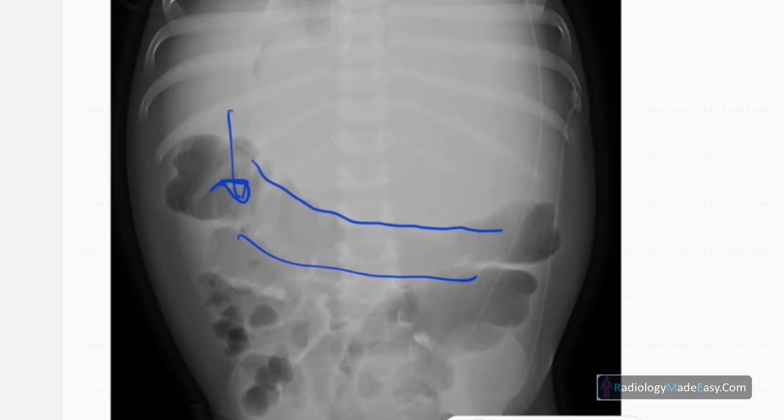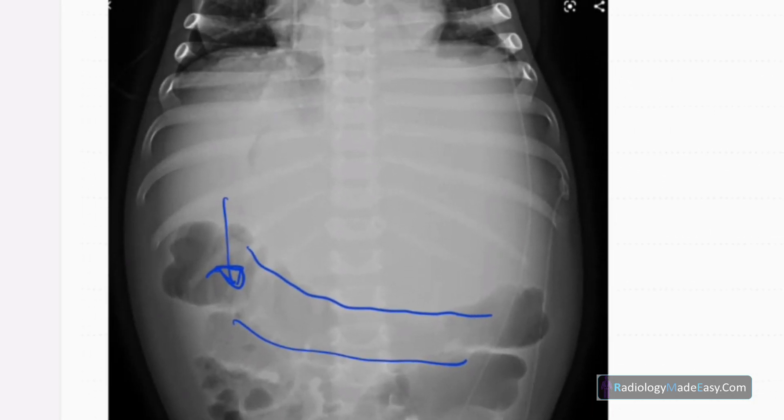So it is inferior displacement there, and you can see an opacity, ill-defined opacity in the epigastric, umbilical, and left hypochondriac region. So it's a homogeneous opacity.